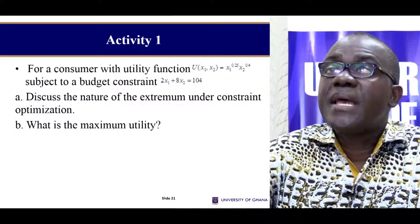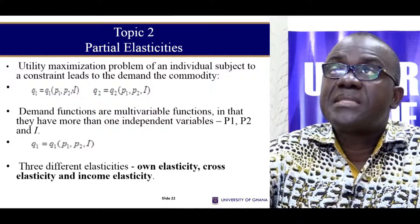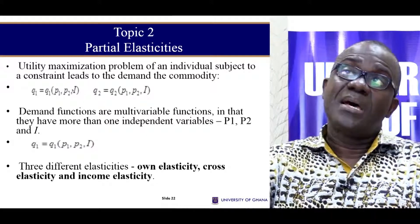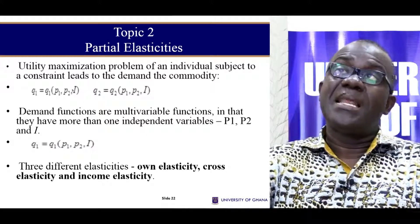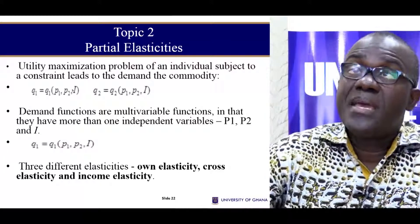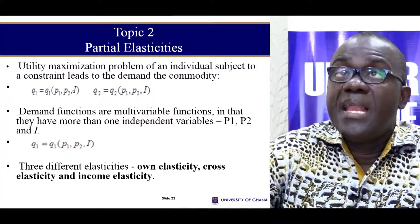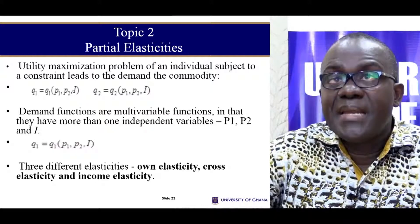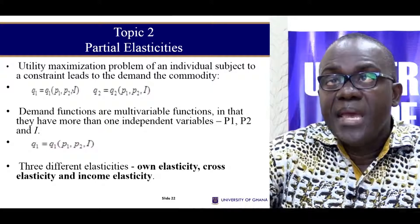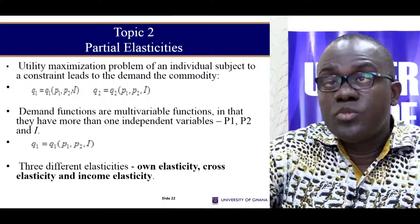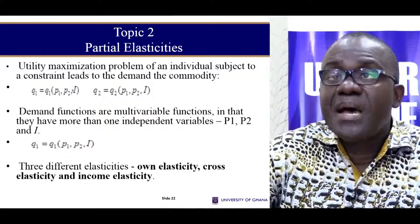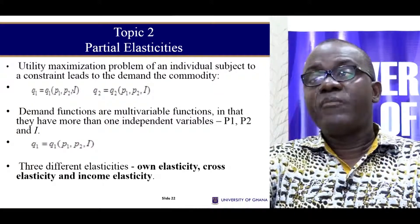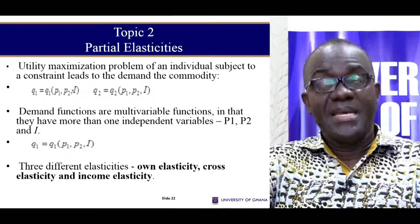There is an activity here which I would like you to try your hands on. Let's meet at the chat room if you have any problems. Now, once we have these demand functions, I would like us to discuss what we call partial elasticities. You may have discussed elasticities before, but here the emphasis is on partial elasticities. When we maximize our utility function, we got demand Q1 depending on P1, P2, and income I, and demand for the second good also depending on P1, P2, and income. We can have three different elasticities: own elasticity, cross elasticity, and income elasticity.